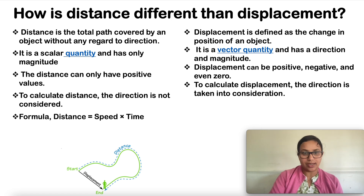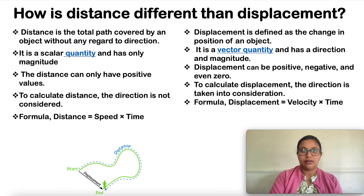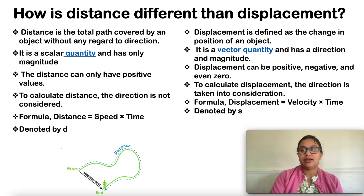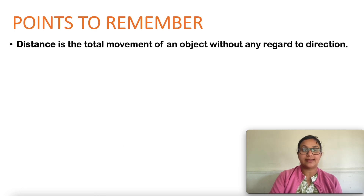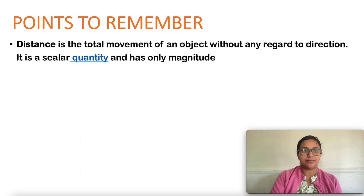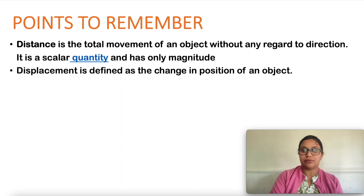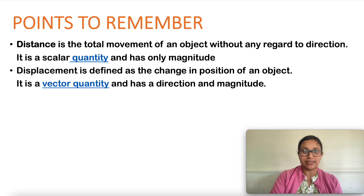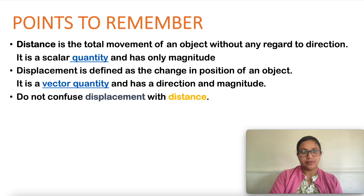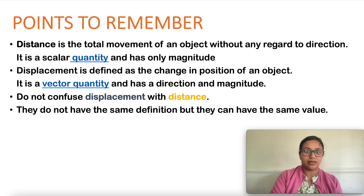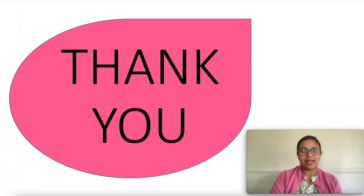The formula for distance is speed multiplied by time, and the formula for displacement is velocity multiplied by time — we will cover these in coming classes when we study speed and velocity. Distance is denoted by small letter d, and displacement is denoted by small letter s. Key points to remember: distance is the total movement of an object without regard to direction — it is a scalar quantity with only magnitude. Displacement is the change in position of an object — it is a vector quantity with both magnitude and direction. Do not confuse displacement with distance; they do not have the same definition, but they can have the same value.